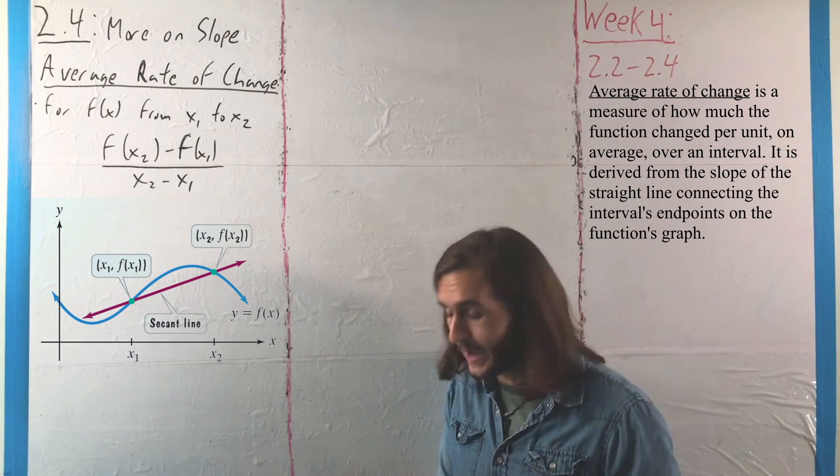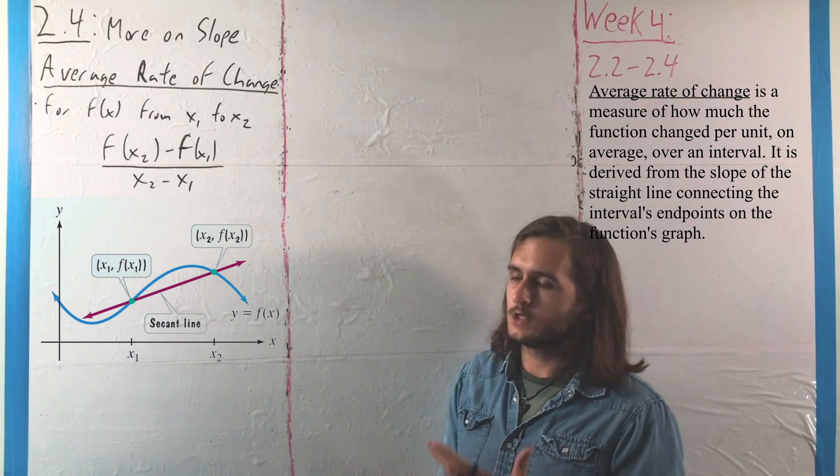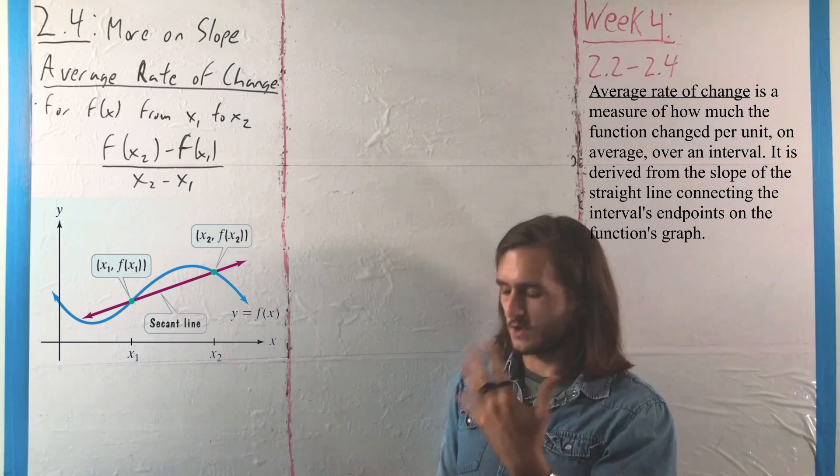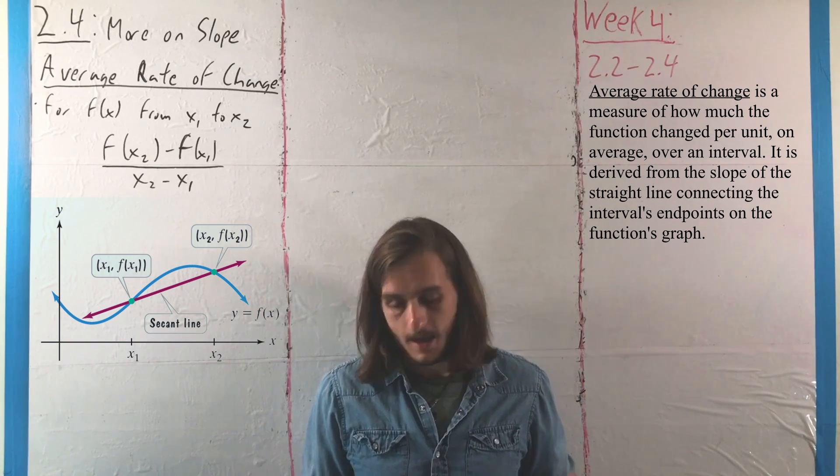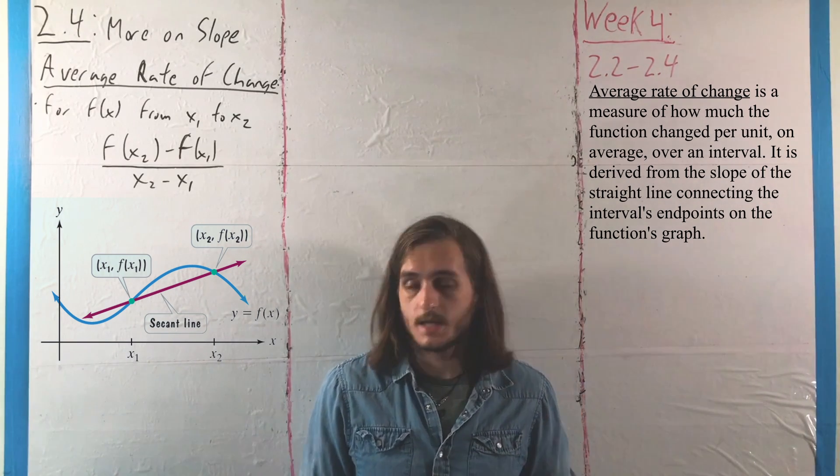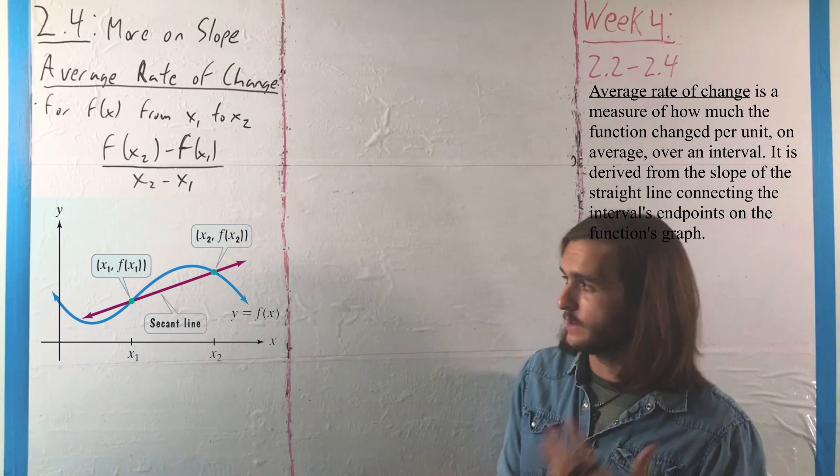What we can use here is an idea called the average rate of change, in which we're finding the amount that has changed from some point x₁ to some point x₂ and drawing a line between it, where that line is a construction specifically called a secant line. And that gives us some better sense of what our function is doing over that interval.